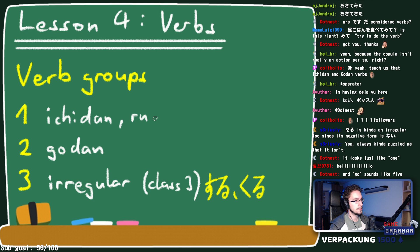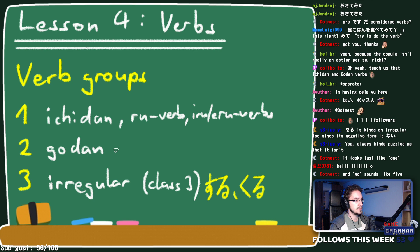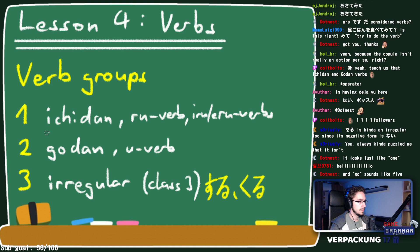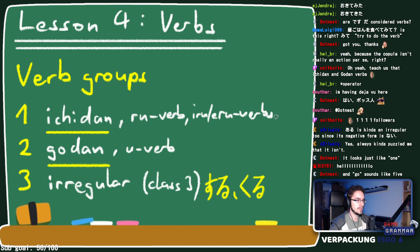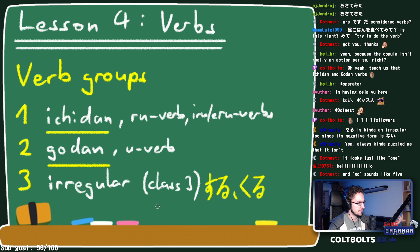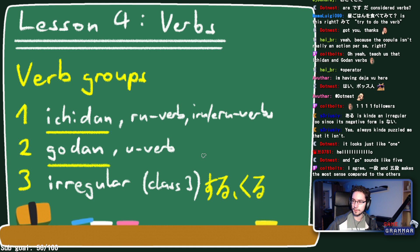Ichidan verbs are sometimes called 'iru/eru verbs,' and godan verbs are sometimes called 'u-verbs.' Some textbooks use 'class two' for ichidan and 'class one' for godan — like Minna no Nihongo — and 'class three' for irregulars. I don't really endorse that numbering because it feels arbitrary. Ichidan and godan make the most sense to me.